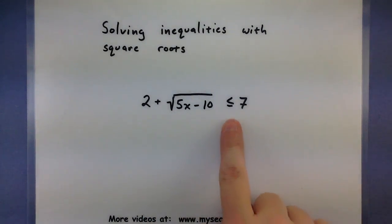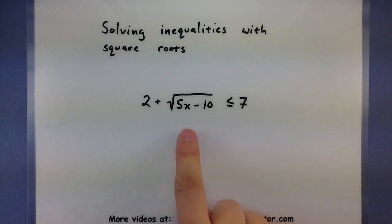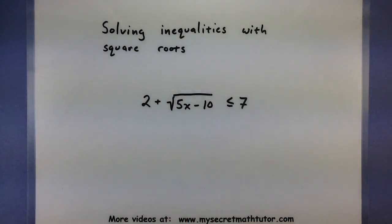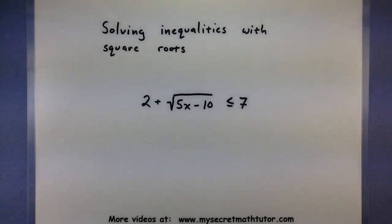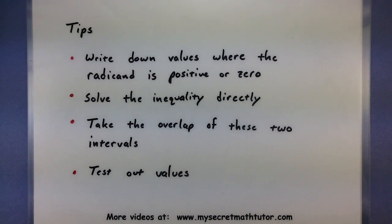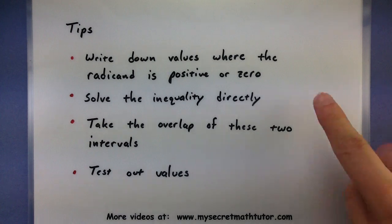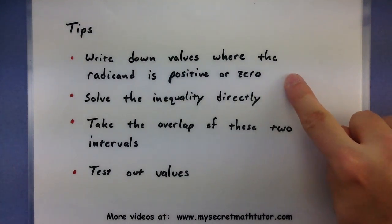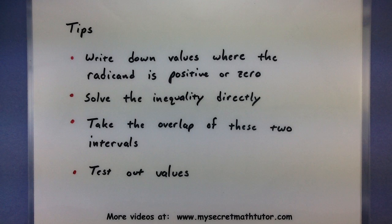Think of something like this. We're solving an inequality because we have that less than or equal to, and we're also worried a little bit about the square root. When you start mixing these two things together, there's just a few tips that you want to keep track of. One has to do with the values that you can actually put into a square root. For this reason, we'll first write down values where the radicand is positive or zero. This will help us avoid having negative values underneath our square root.